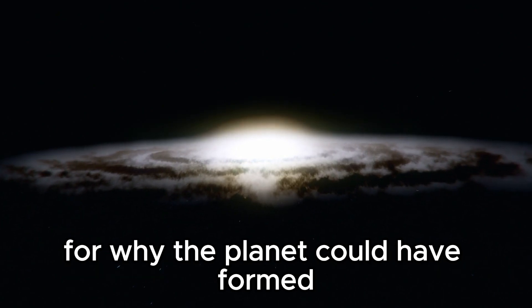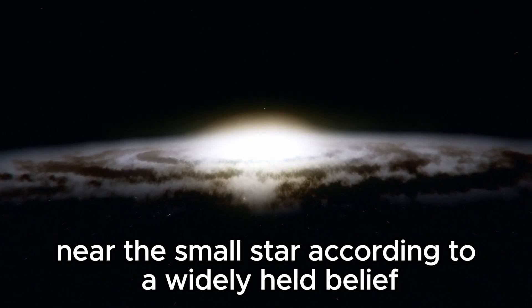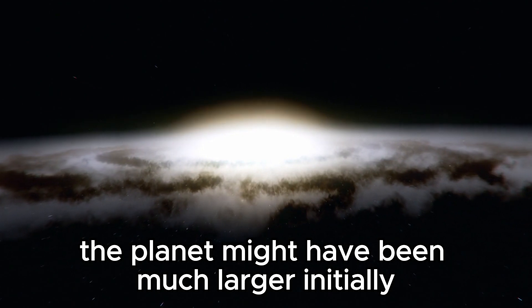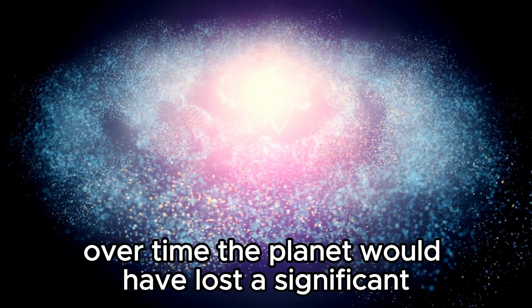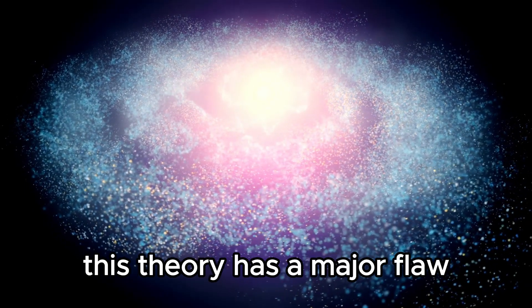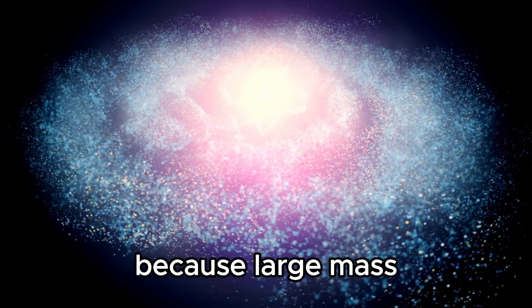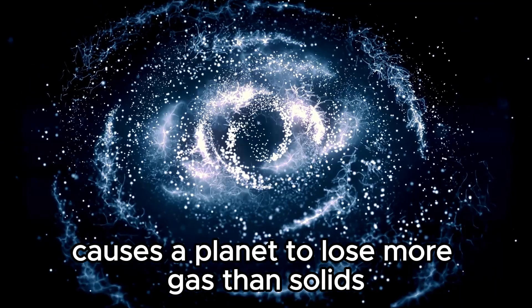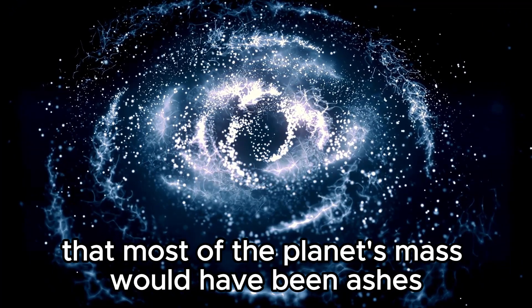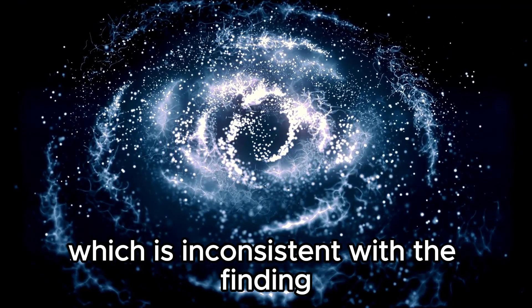Returning to our previous discussion, there are different hypotheses for why the planet could have formed near the small star. According to a widely held belief, the planet might have been much larger initially. Over time, the planet would have lost a significant amount of its mass. However, this theory has a major flaw because large mass causes a planet to lose more gas than solids. In this case, it is hypothesized that most of the planet's mass would have been ashes which is inconsistent with the finding.